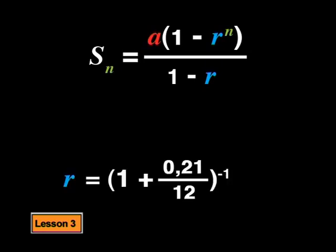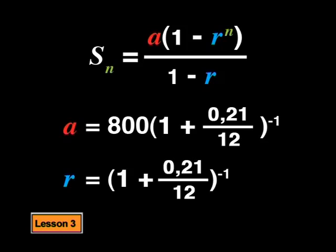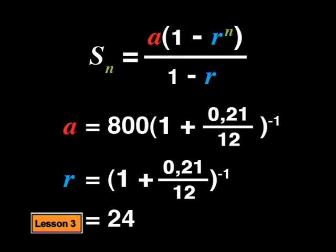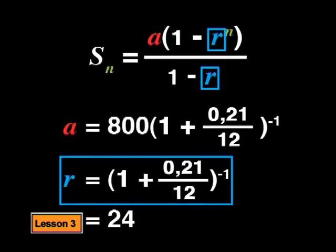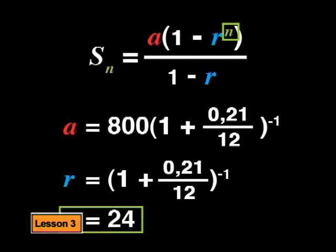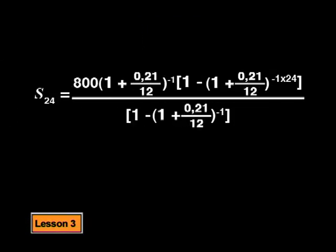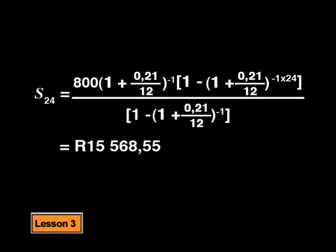You're quite right. And if you remember, we used the sum formula to calculate the future value of the annuity in the previous lesson. So can we use the same approach here? Yes, we can. The common ratio is (1 + 0.21/12) to the minus 1, and the first term is 800 times that value. Substituting the values into the formula for 24 payments, we find that the present value of a loan Tebuho can afford is 15,568 rand and 55 cents, rounded off to the nearest cent.